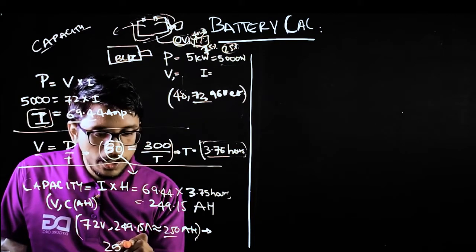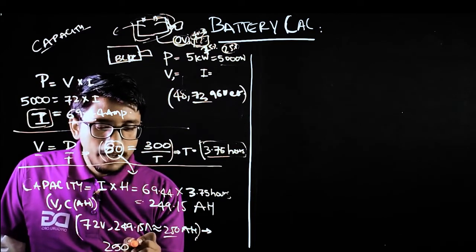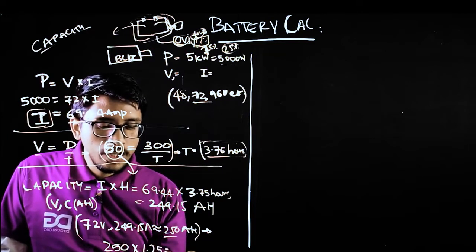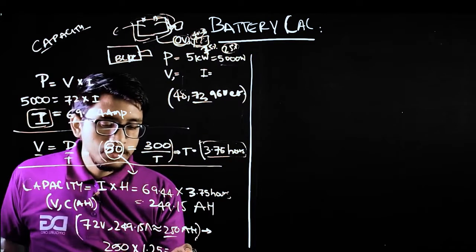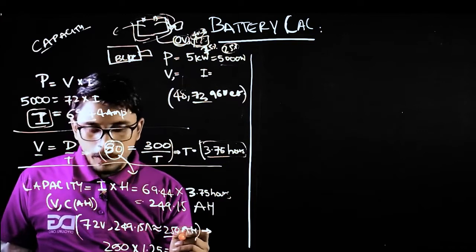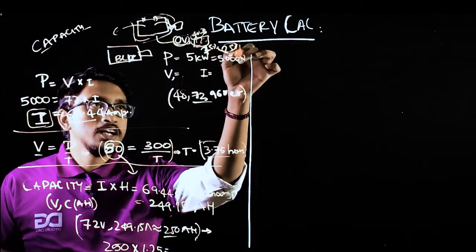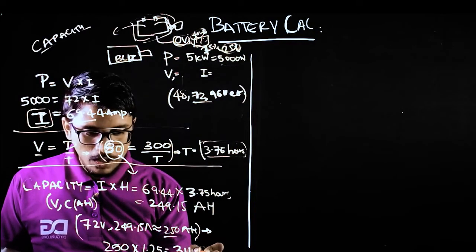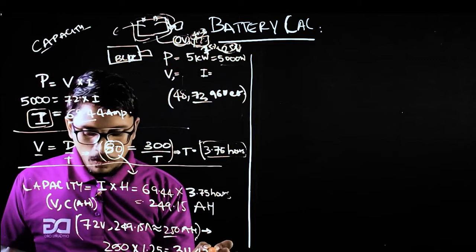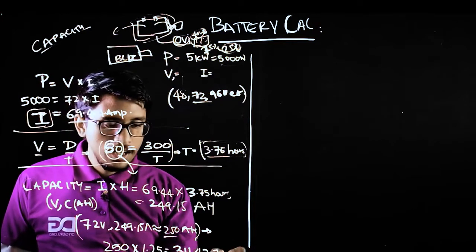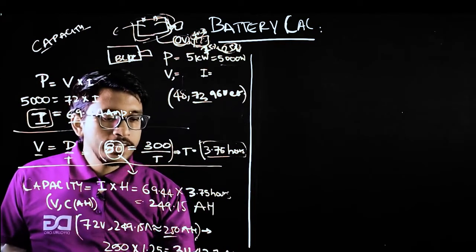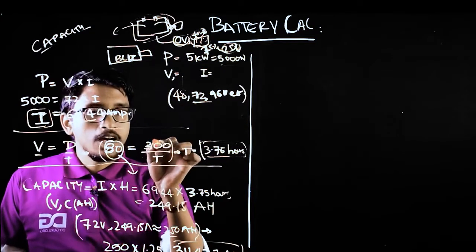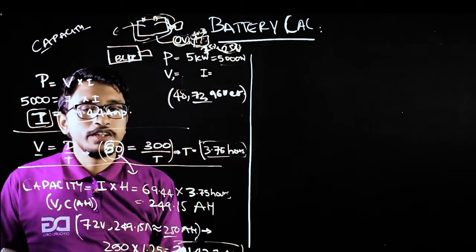Whatever battery pack you selected, 250 ampere-hour or 249.15 ampere-hour, you need to multiply with 1.25 to remove this 25 percent loss. The value is 311.437 ampere-hour.